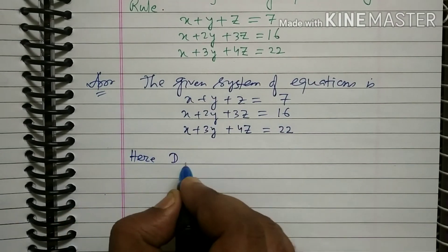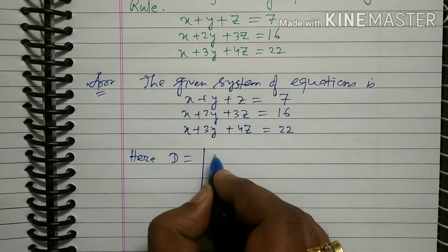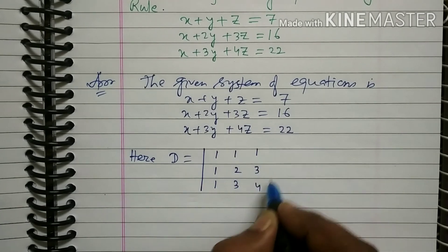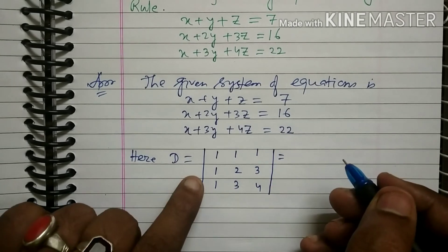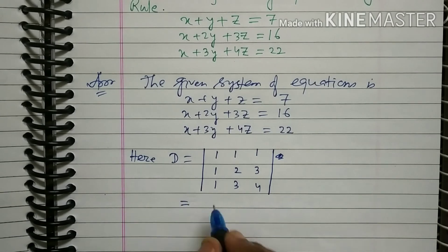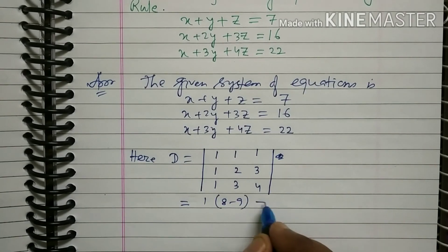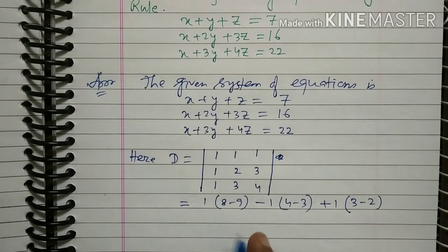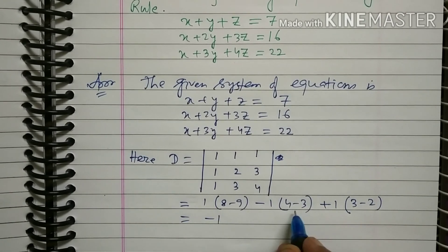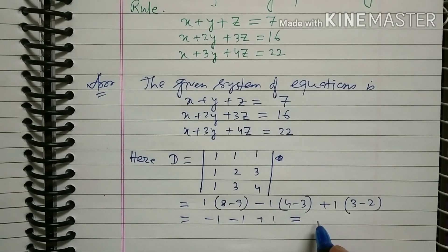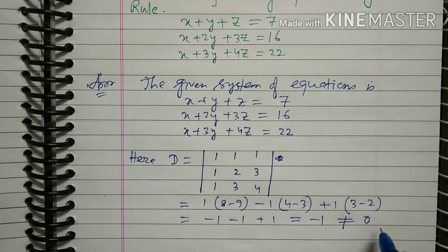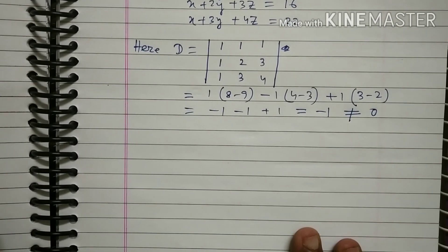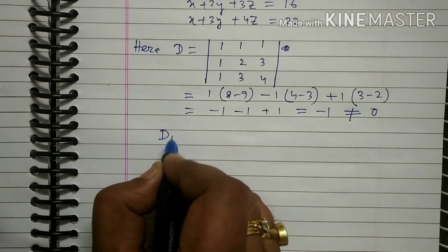Here, D is the determinant of the coefficients of x, y, z: the matrix with rows 1 1 1, 1 2 3, 1 3 4. This equals 1(8 minus 9) minus 1(4 minus 3) plus 1(3 minus 2), which gives minus 1 minus 1 plus 1, equals minus 1. Since D is not equal to zero, the first condition is satisfied.